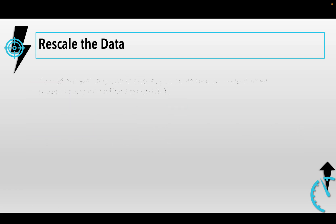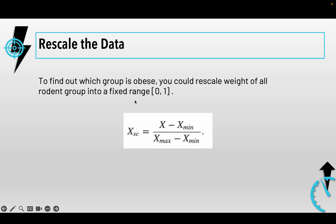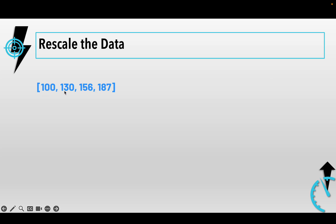There are two techniques for data rescaling. The first is Min-Max Scaling, sometimes called data normalization. Given a list of numbers, Min-Max scaling resizes your data to a fixed range of zero to one. The formula is: the original x minus the minimum value in the list, divided by the difference between the max and minimum. For example, suppose we have the list: 100, 130, 156, 187.